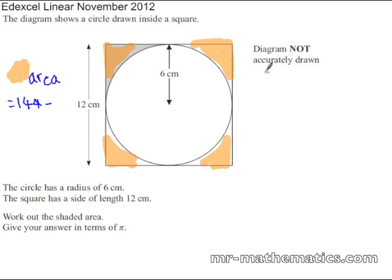Take away the area of the circle which is going to be, we know the formula as pi r squared. The radius is given to you as 6 cm, so it is pi times 6 squared which you can simplify as 36 pi.